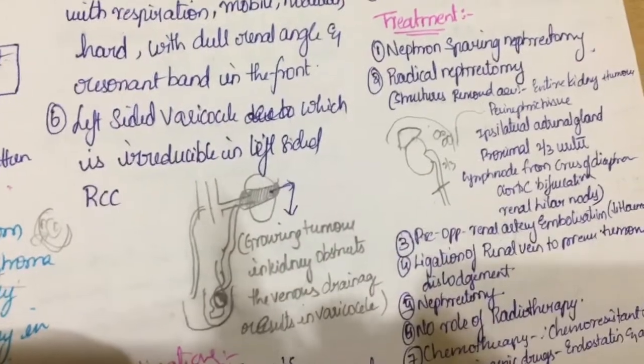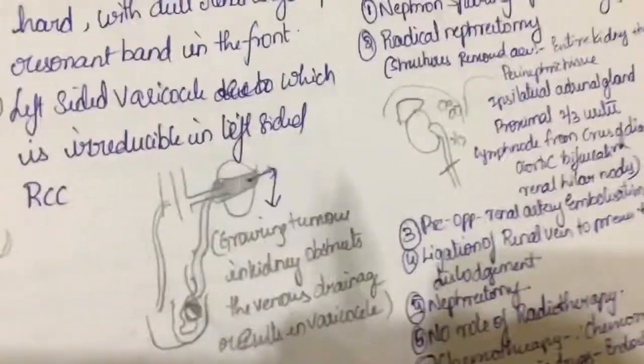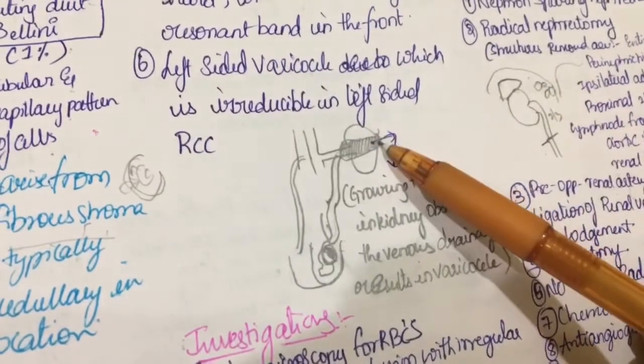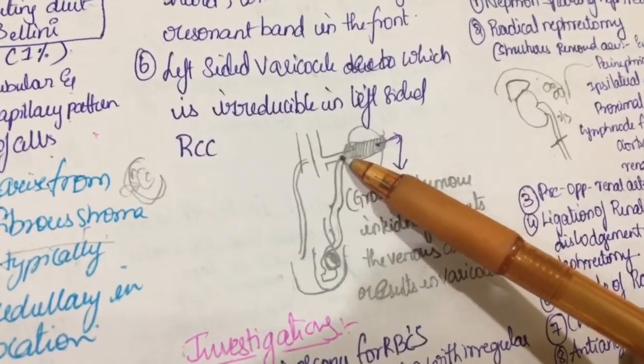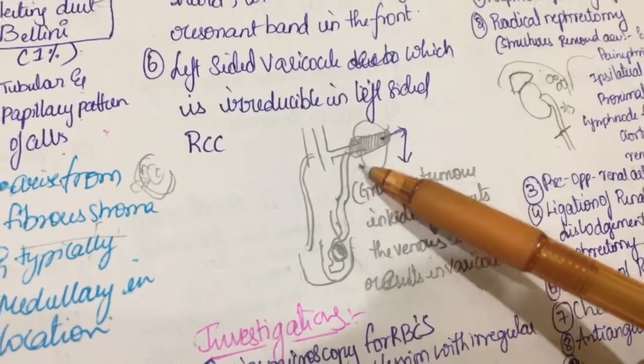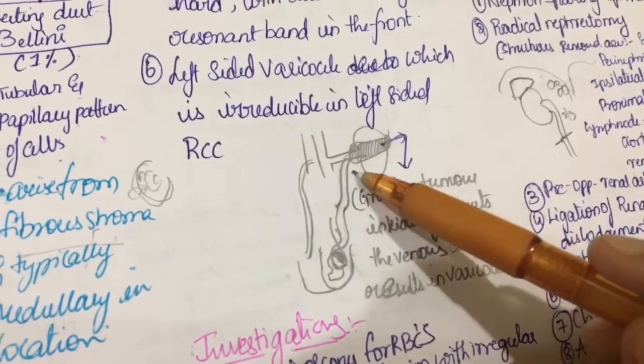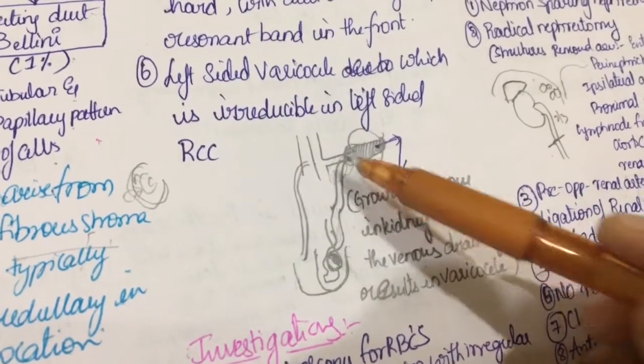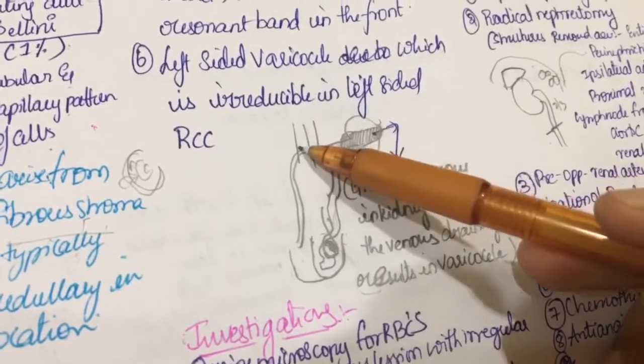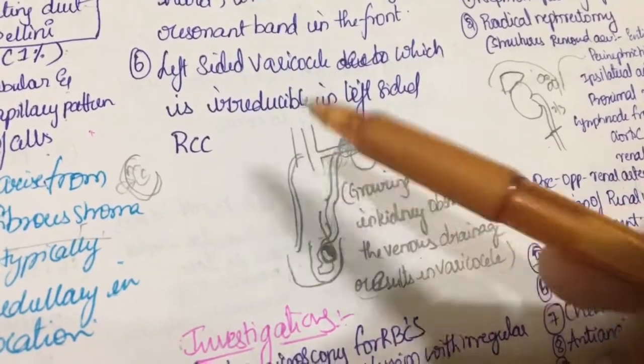Left-sided varicocele which is irreducible. Left-sided varicocele is because growing tumour in the left side compresses left renal vein where the testicular vein open directly into the left renal vein which blocks the drainage of the left testicular vein. Hence, there is varicocele irreducible.